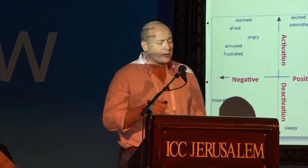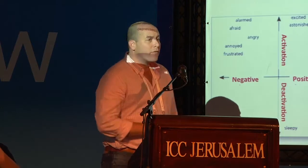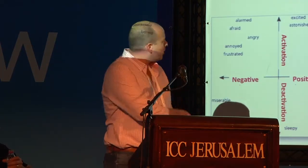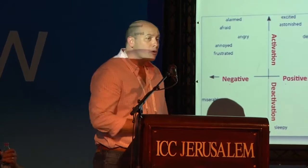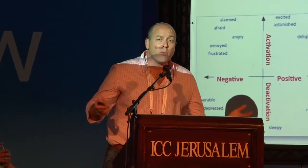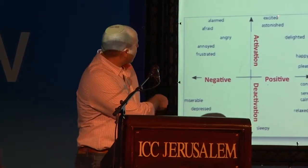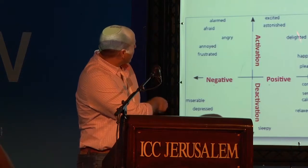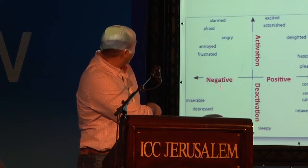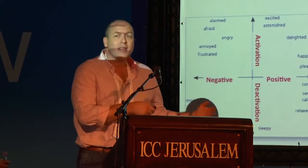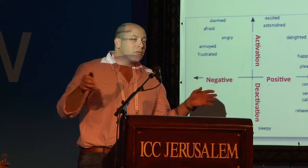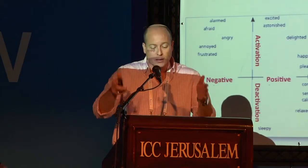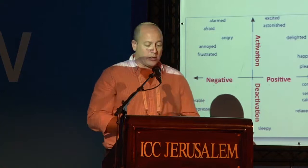This idea of the distinction between good and bad is very robust in psychological models. If you take a look at one of the most famous models, the circumplex model of emotion, you can see there's a very big distinction between the positive things on one side and the negative things on the other side. The world of emotions for psychologists is nicely separated with clear walls between each category.